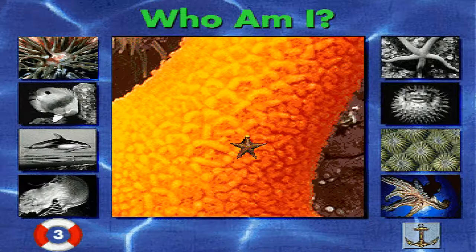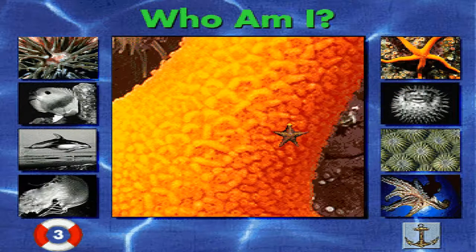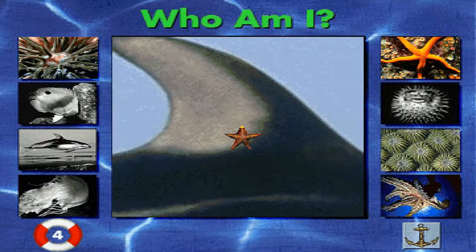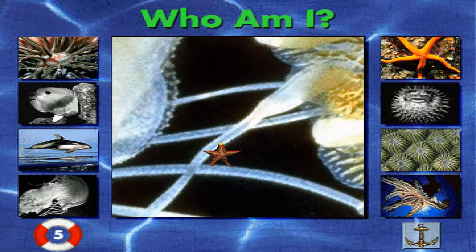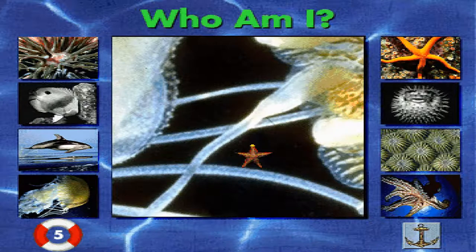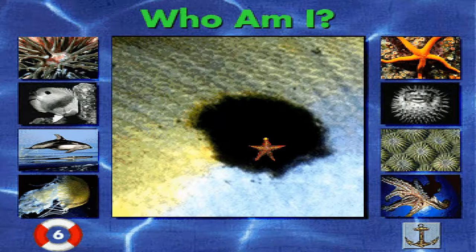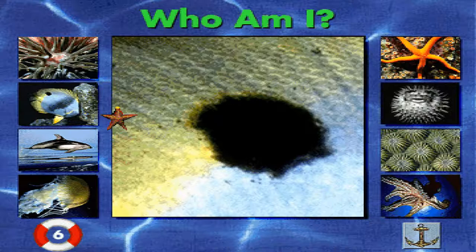Can you guess which animal this is a part of? You're right! I'm a starfish, and that's my arm. You're doing great! Can you guess which animal this is a part of? You're right! I'm a dolphin, and that's my dorsal fin. Can you guess which animal this is a part of? You're right! I'm a jellyfish, and that's my tentacle. Can you guess which animal this is a part of? You're right! I'm a butterfly fish, and that's my eye spot.